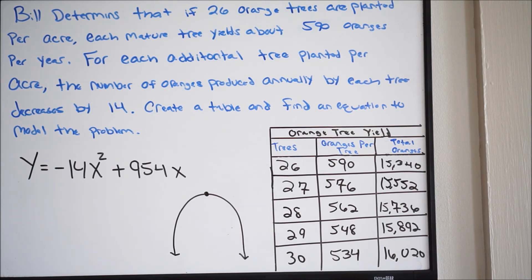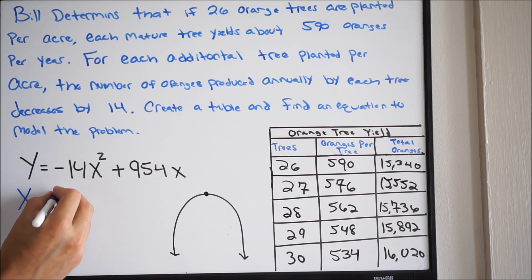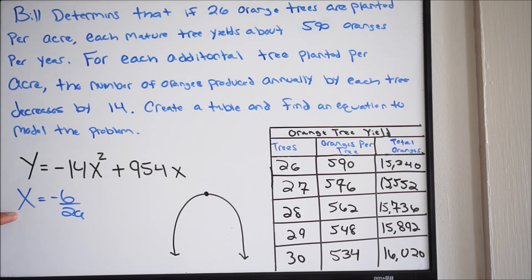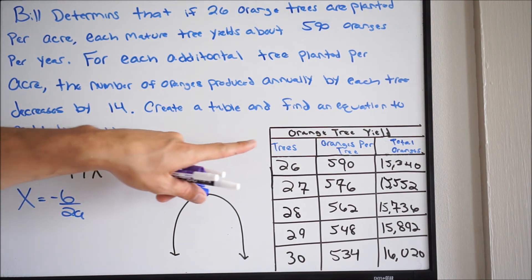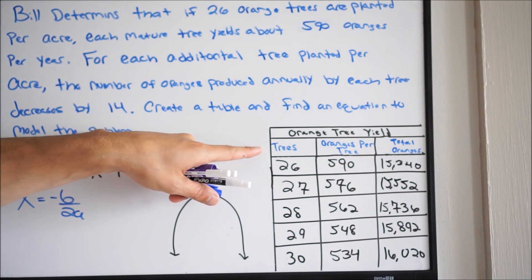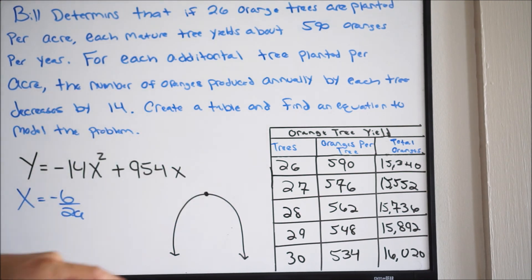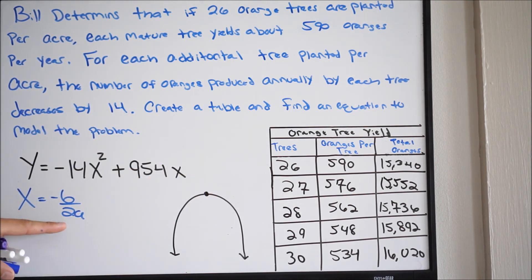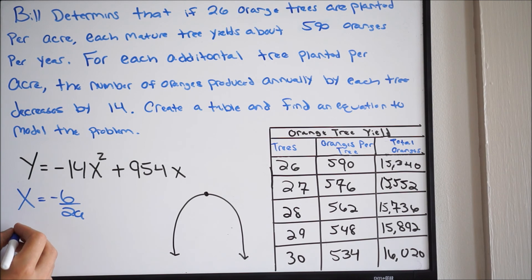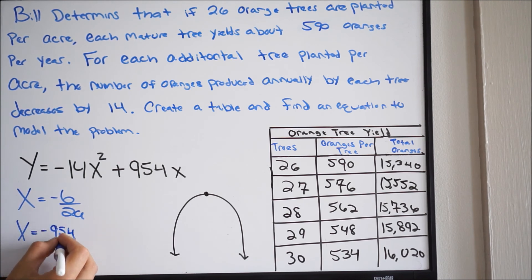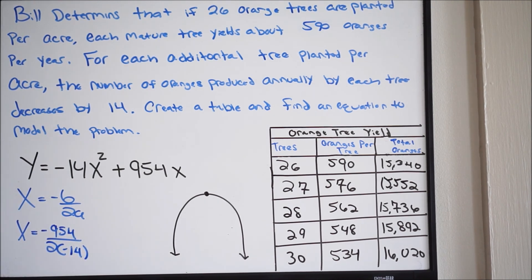So we want to determine how many trees we need to plant in order to get the max harvest of oranges. And how we're going to do that is simply find the vertex. We can use the equation where x equals negative b all over 2a — that's how we get the x value of the vertex. Remember, we're trying to find how many trees we need to plant in order for a max return, so we're trying to find the x value of the vertex. We're going to get these values from the equation our calculator generated.